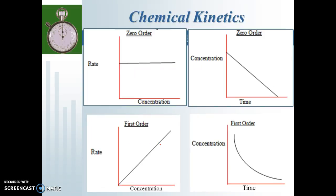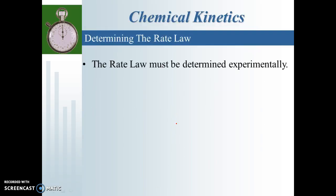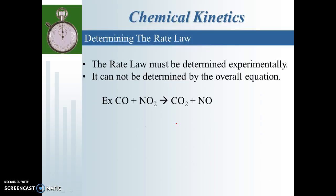With first order reactions, as the concentration gets higher, the rate gets faster. The rate law is something that you have to determine from experimental data. You can't just look at a chemical equation and say that's the rate law for this reaction. If you did, you might look at an equation and predict what you think the rate law might be, but you might not be right.